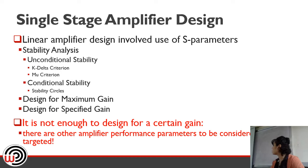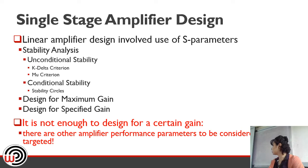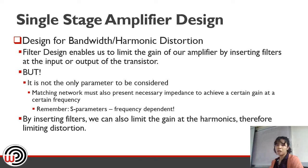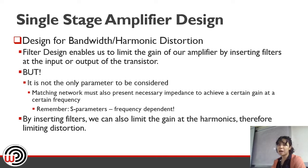Although you're familiar with stability testing and designing for a specific gain, you still don't know how to design a complete amplifier since gain is not the only parameter. We can design for bandwidth or harmonic distortion. When using only S-parameters, we look at linear parameters. The bandwidth and harmonic distortion depend not only on the transistor S-parameters but also on the filter used for the matching network.